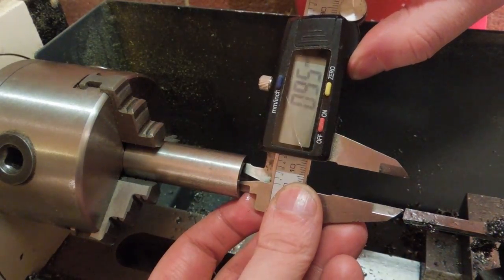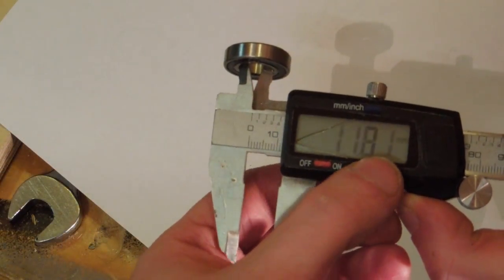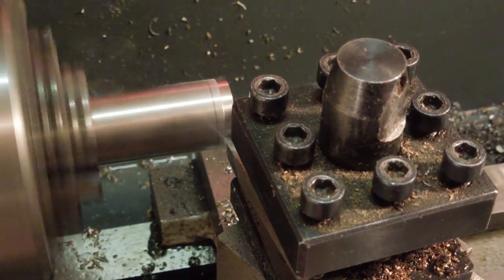My set of calipers doesn't measure inside diameters too accurately. I tested it on a 12mm inside bearing. A 16.5mm step was then turned onto the end of the bar, a bit over 5mm long.